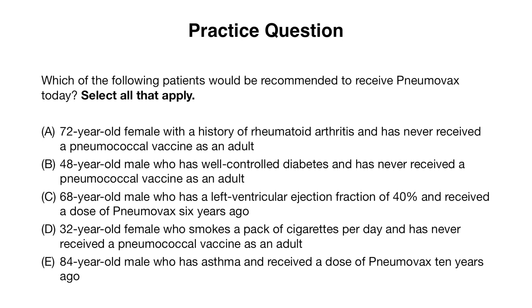Answer choice A: a 72-year-old female with a history of rheumatoid arthritis who has never received a pneumococcal vaccine as an adult. Because this patient is above the age of 65 and has never received any pneumococcal vaccine, she would be eligible for Pneumovax at this time.